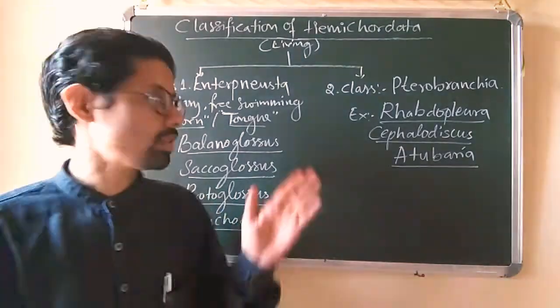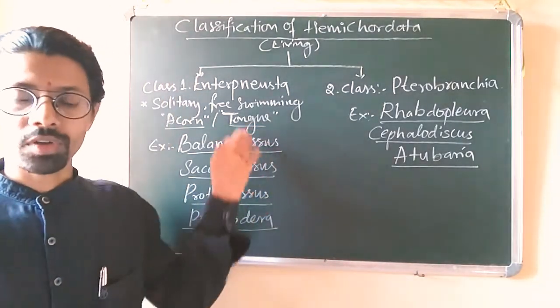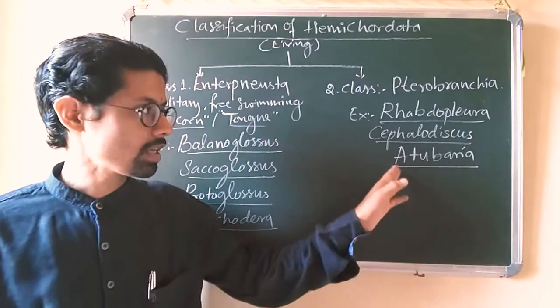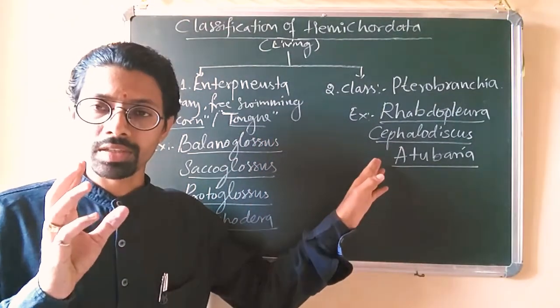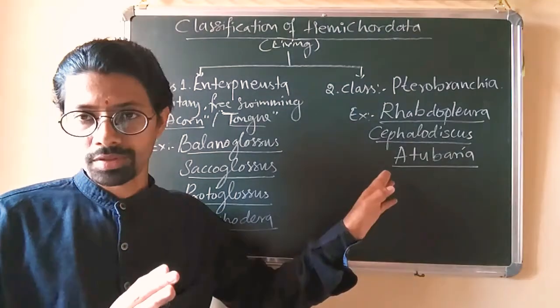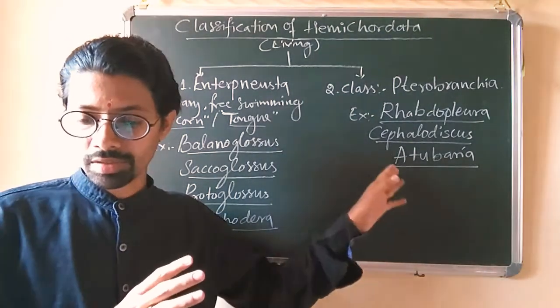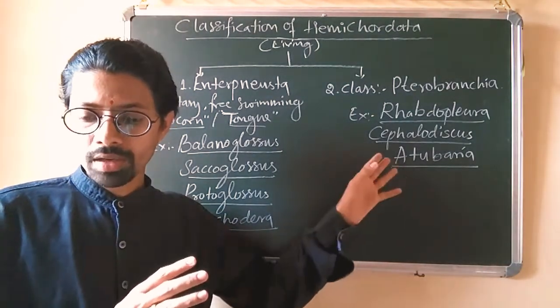If you talk about this category, they are having U-shaped gills, but here U-shaped gills are not present. They have only what you call as longitudinal gills. Now again, if you talk about the gills here, the gills are one or absent—single gill or completely absent in them.